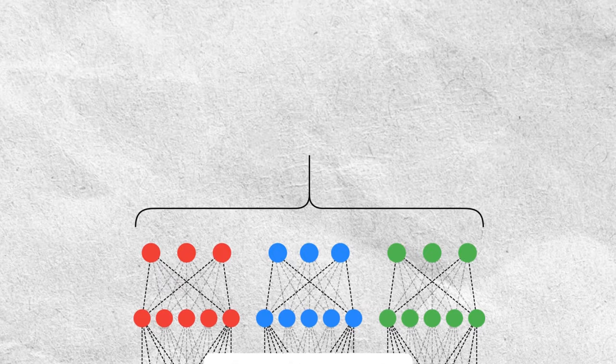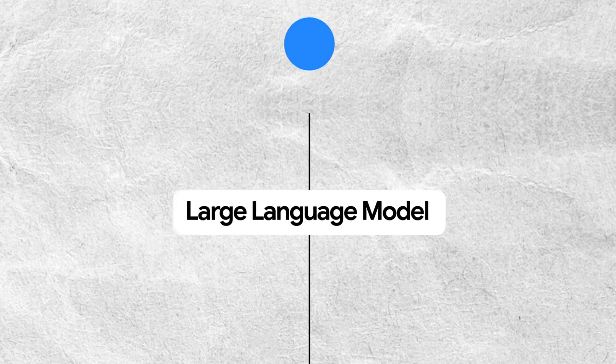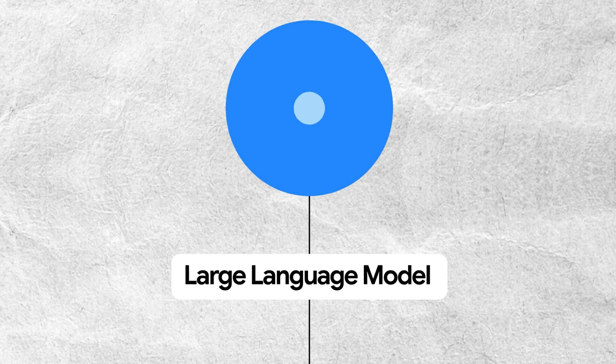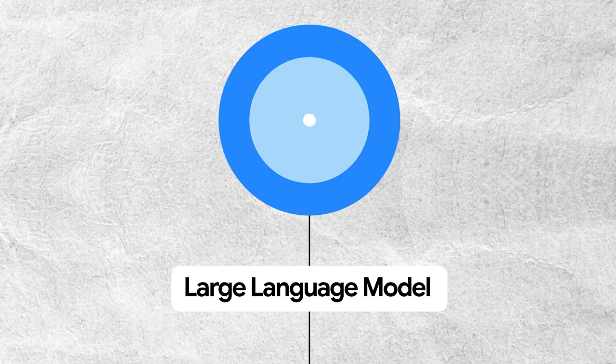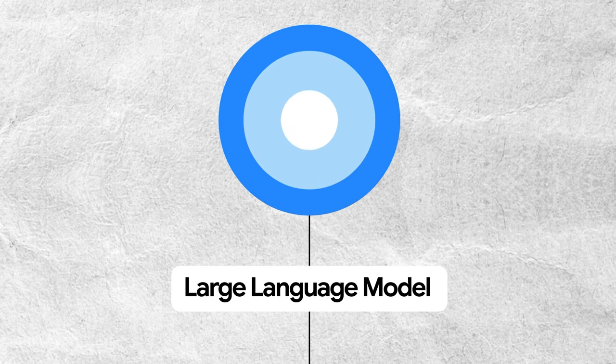It wasn't until researchers started to make these models really large and train them on these huge data sets that they started showing these impressive results, like understanding complex, nuanced language and generating language more eloquently than ever.